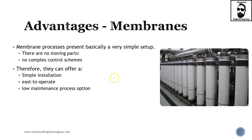Membrane processes present a very simple setup, which is also a great advantage. Many of them come in cartridges, so once the equipment is installed, changing or maintaining the equipment is actually very easy. There are no moving parts, such as in a condenser, reboiler, or compressor, and there are no complex control schemes. Therefore, they can offer simple installation, easy operation — which is one of the most convenient aspects of membranes — and also a low maintenance process, low in complexity.